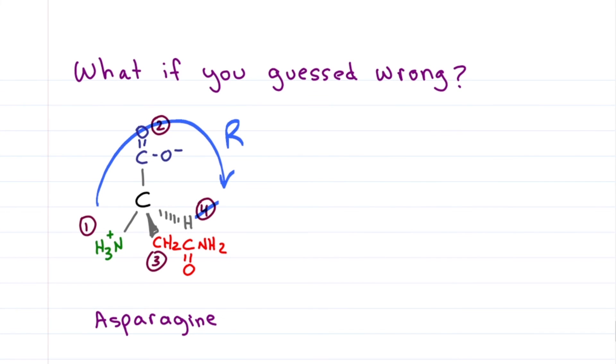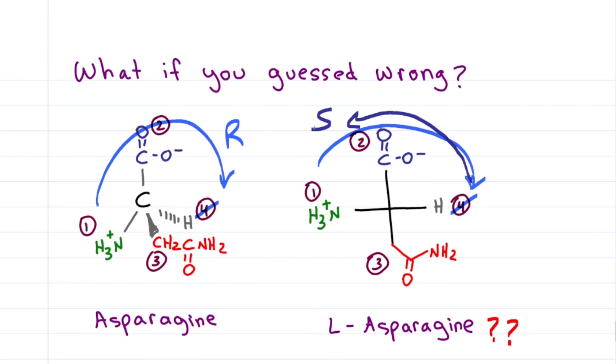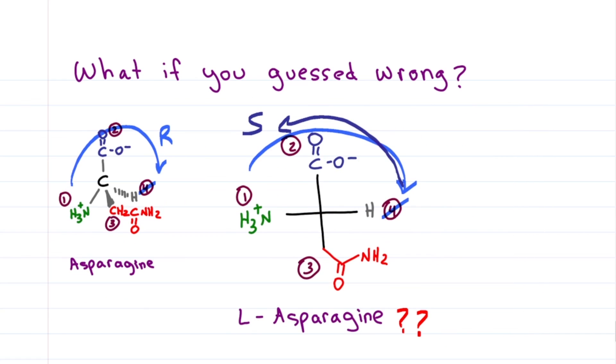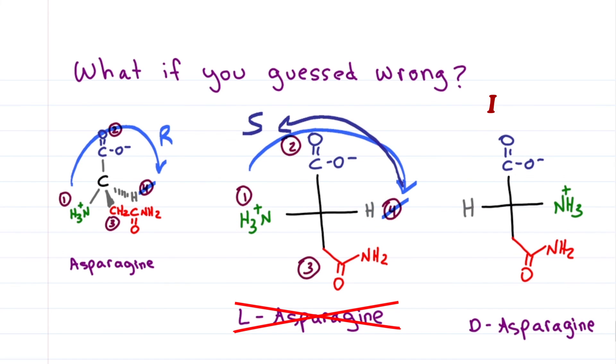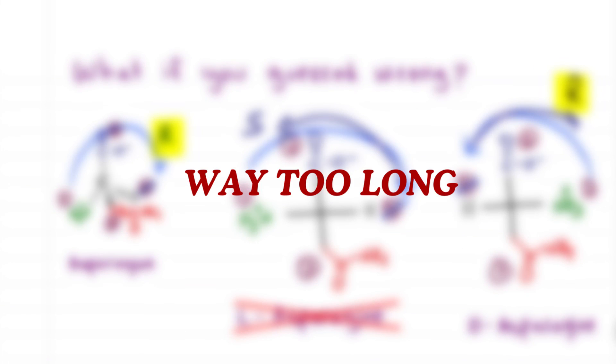What if you guessed wrong? Let's guess that this is L-asparagine. Look at that. R and S not the same. We guessed wrong, so let's use the swap method to switch the amine and the hydrogen. Since D is the enantiomer of L, this should be R, but let's prove it. Yup, but even this took so long.